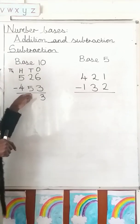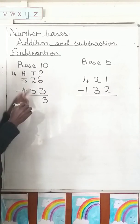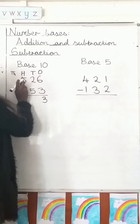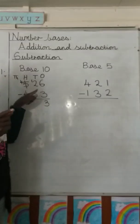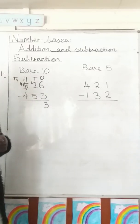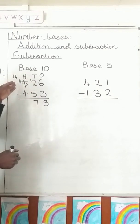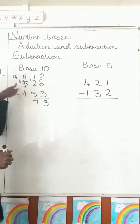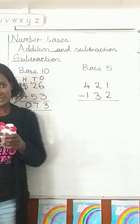Next: 2 minus 5 — we can't subtract 5 from 2 because 2 is smaller, and we can't have negative numbers here. So we borrow from the next number. We take 1 from the 5, leaving 4. The borrowed 1 becomes 10 in the ones column, so we have 12 minus 5 which gives 7. Then 4 minus 4 gives 0. That's how we subtract in base 10.